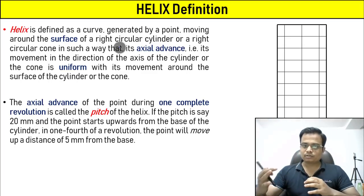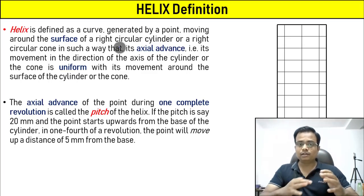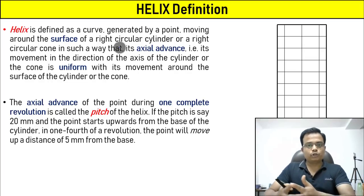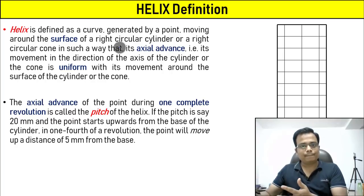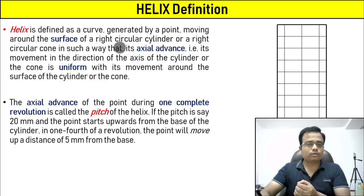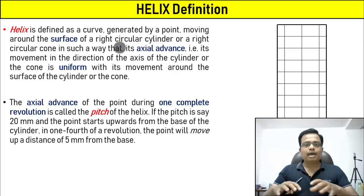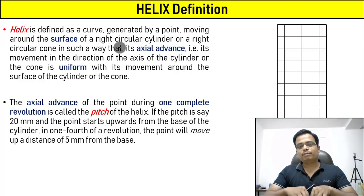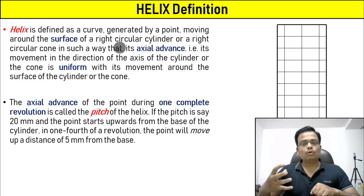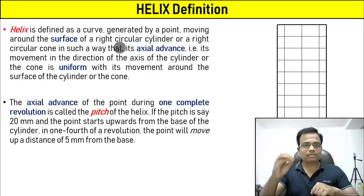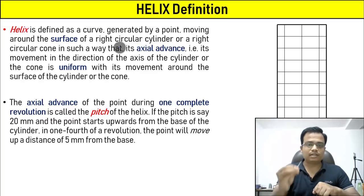We have planned four videos for this series on helical curves. We are going to start off today's session by learning how a cylindrical helix can be constructed. This is going to be followed by helical spring of a wire having a square cross section, then a wire having a circular cross section. And we will wind up the entire session by learning the construction of a conical helix. But first of all, let us try to understand what exactly is the meaning of a cylindrical helix.